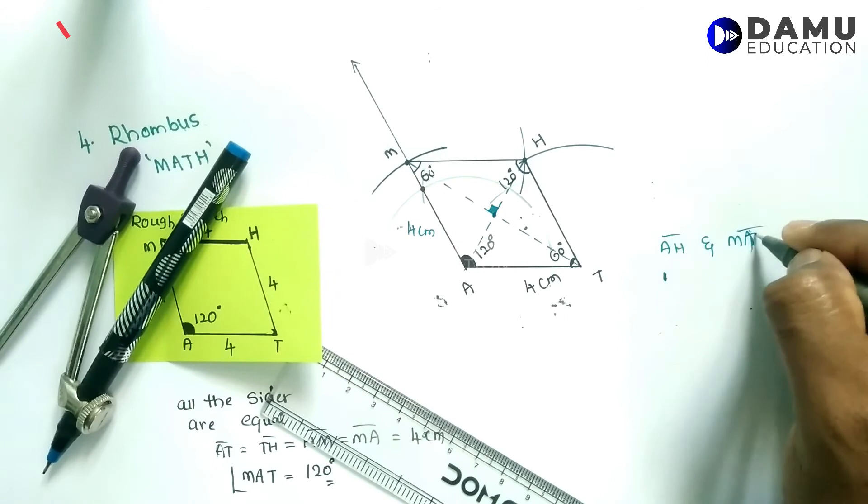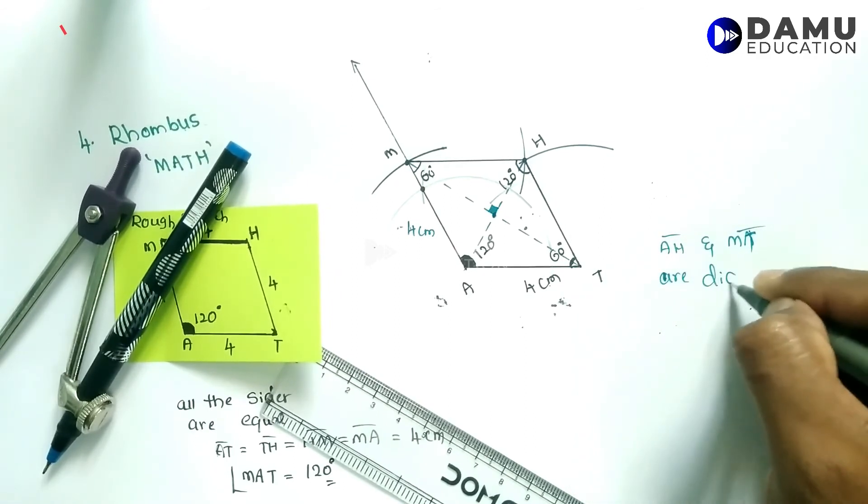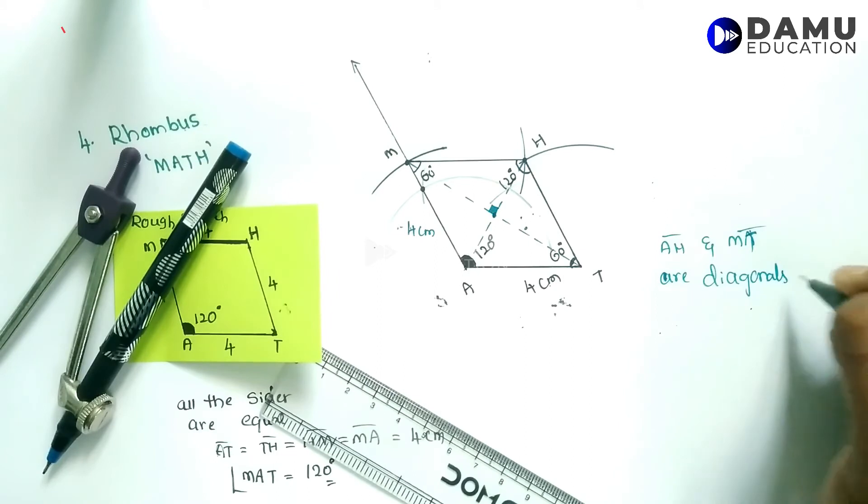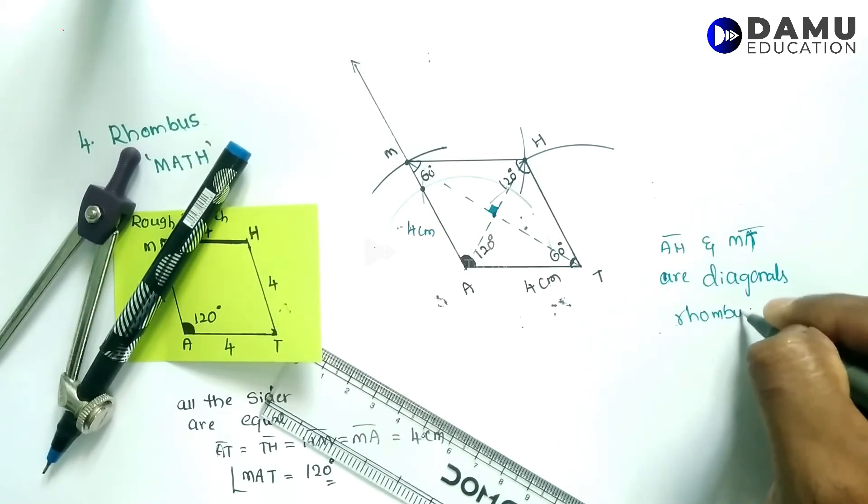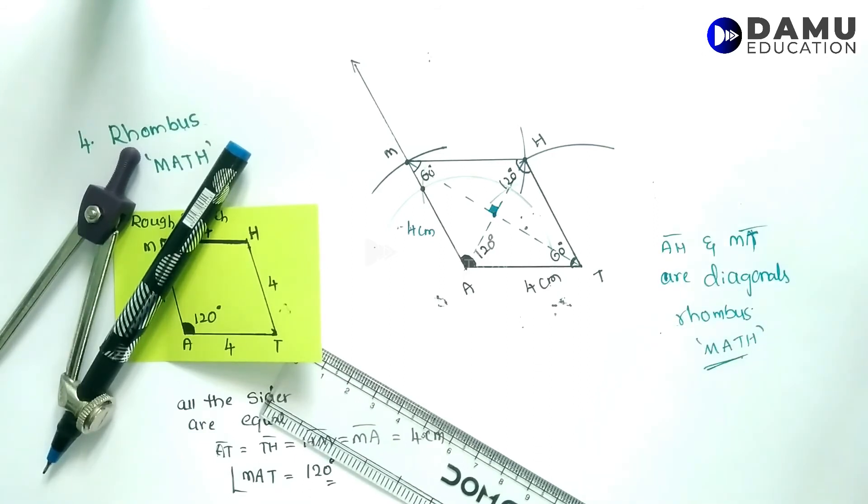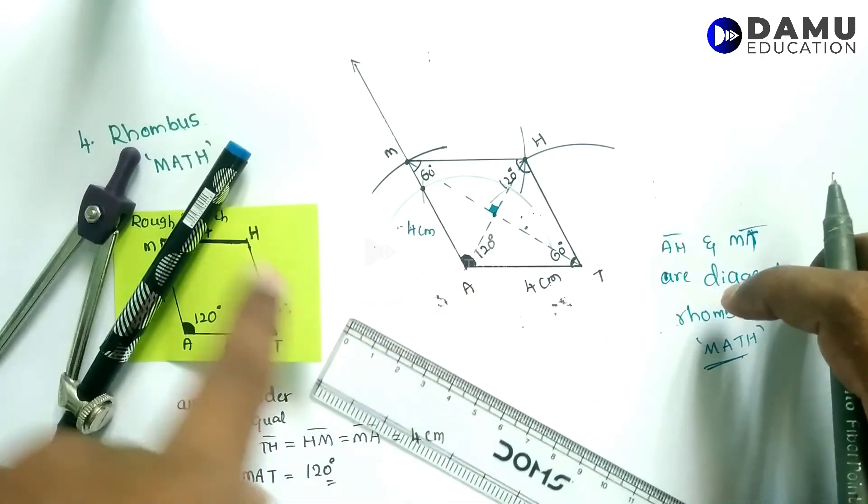These are AH and MT, the diagonals of rhombus MATH. We have constructed the rhombus as requested.